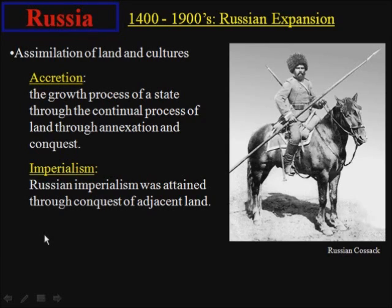They basically colonized their own landscape. They had a huge landscape to explore and colonize, so they didn't really build a navy to sail around the world. They were mostly interested in exploring their own territory, and that was sort of the responsibility of these Russian Cossacks, as demonstrated on this slide. Their imperialism was basically through conquest of adjacent land rather than building a navy to create colonies around the world.